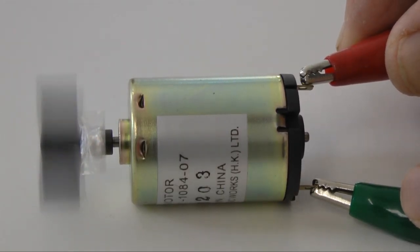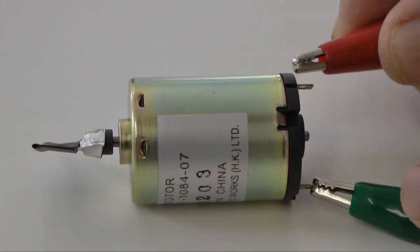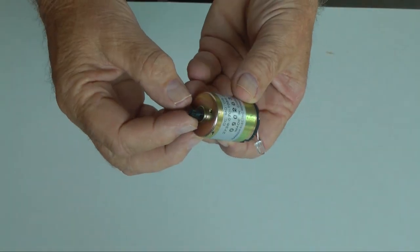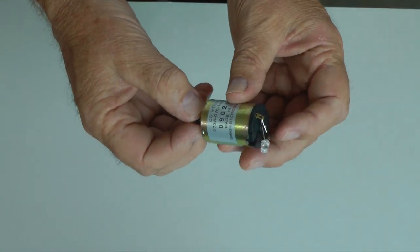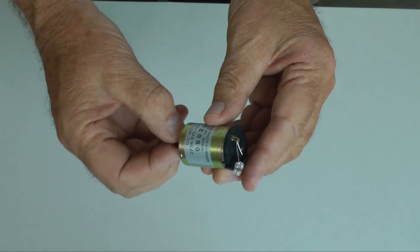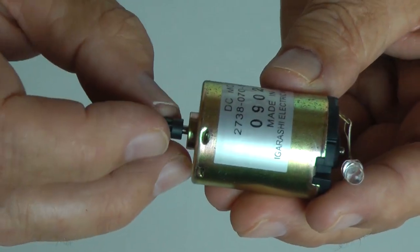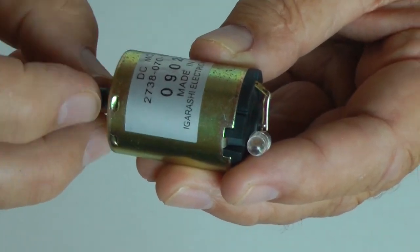Interestingly, most DC motors will also function as electrical generators. I have connected an LED to the power connectors on this small DC motor. Spin the motor shaft and the LED lights. Electricity has been created.